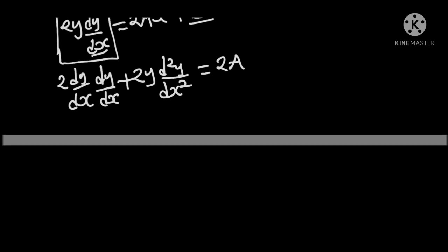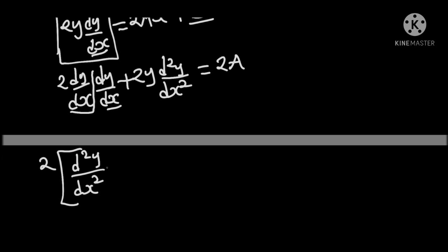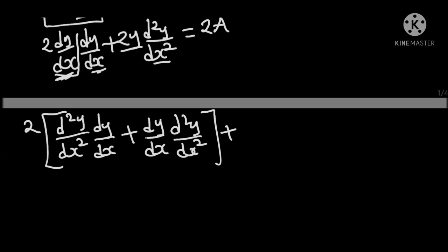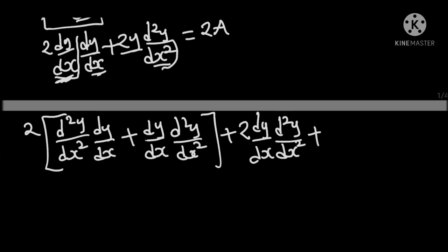Now let's differentiate for the last time. 2 is a constant factor we can factor out. Applying the product rule: differentiating d squared y over dx squared times dy over dx, we get d squared y over dx squared times dy over dx, plus dy over dx times d squared y over dx squared. Then differentiating 2y times d squared y over dx squared: differentiating 2y gives 2 dy over dx times d squared y over dx squared, plus 2y times d cubed y over dx cubed, equals 0, because the right side constant becomes 0.